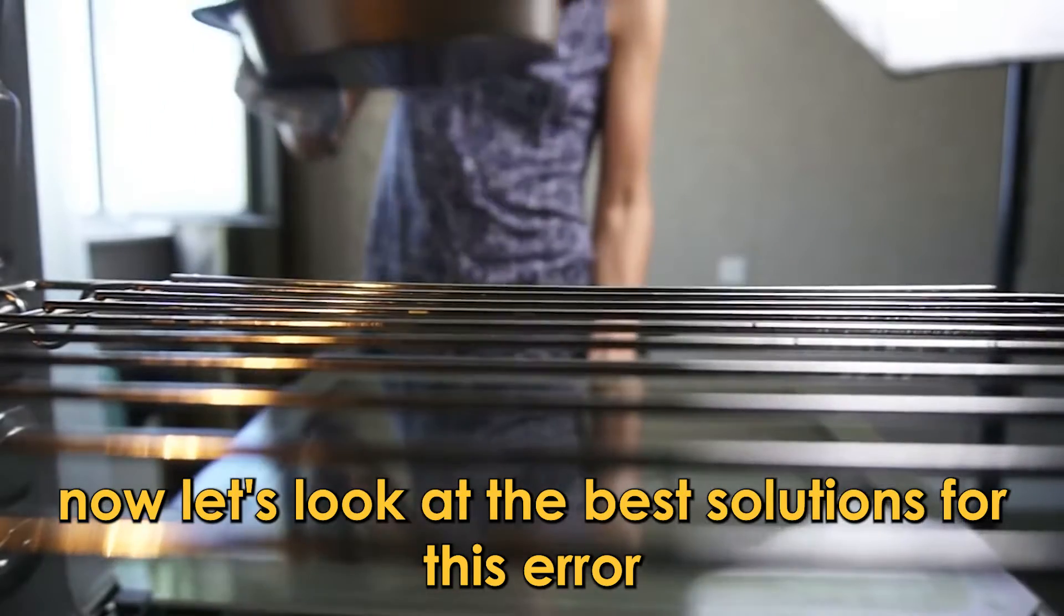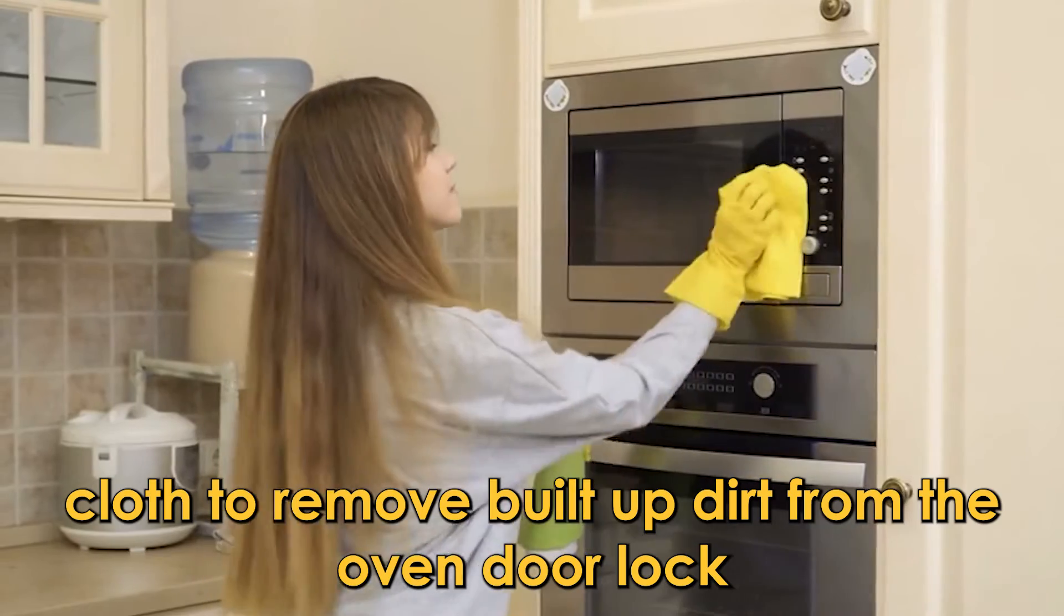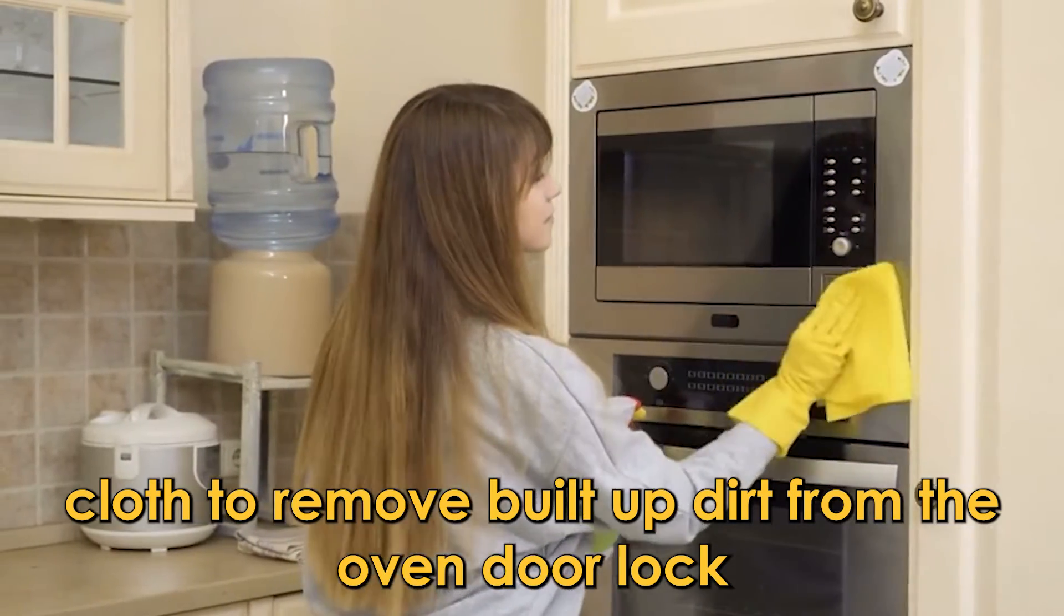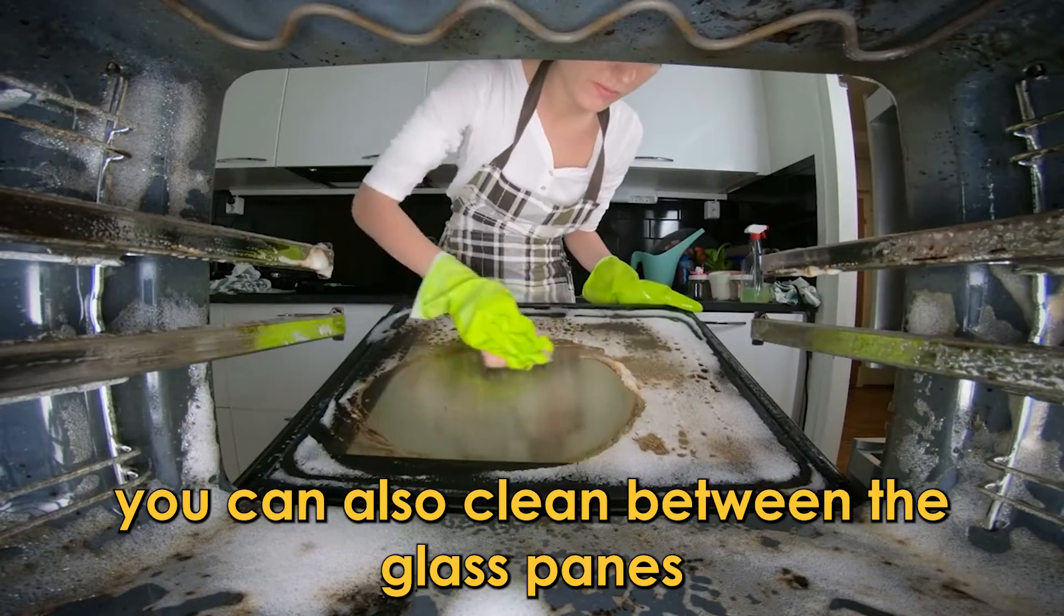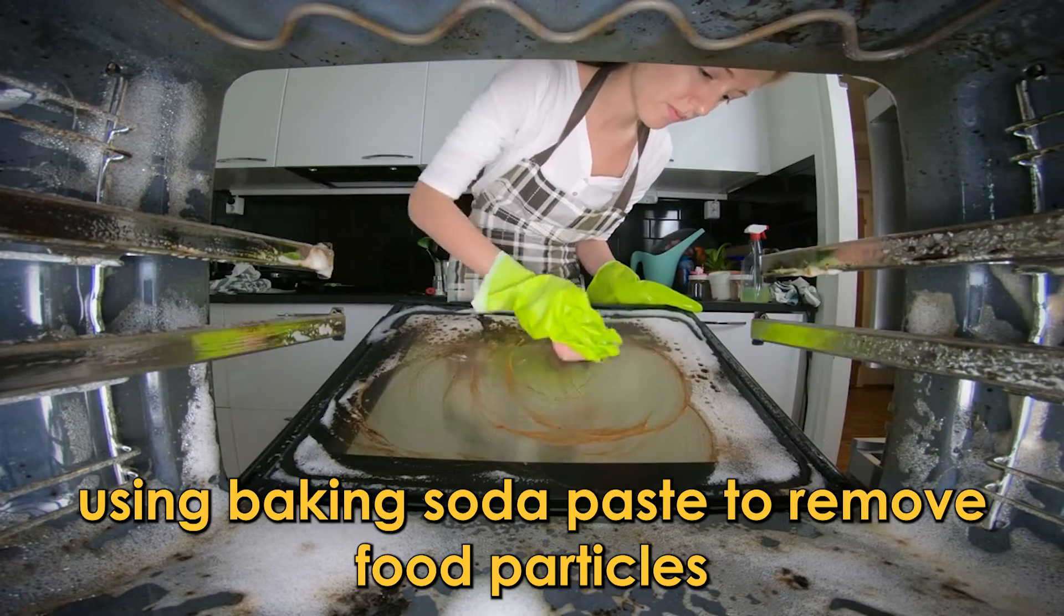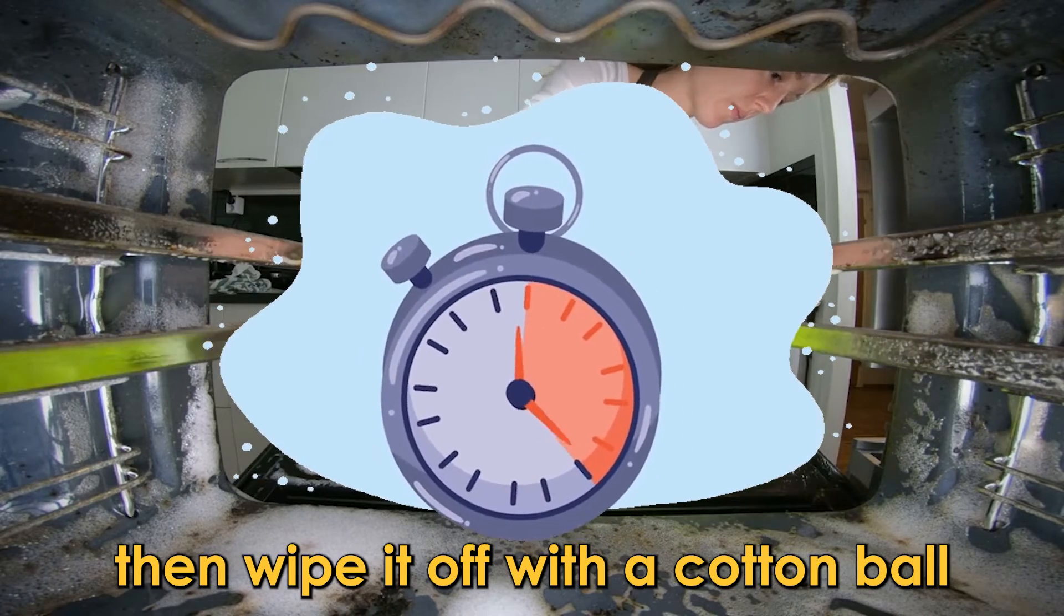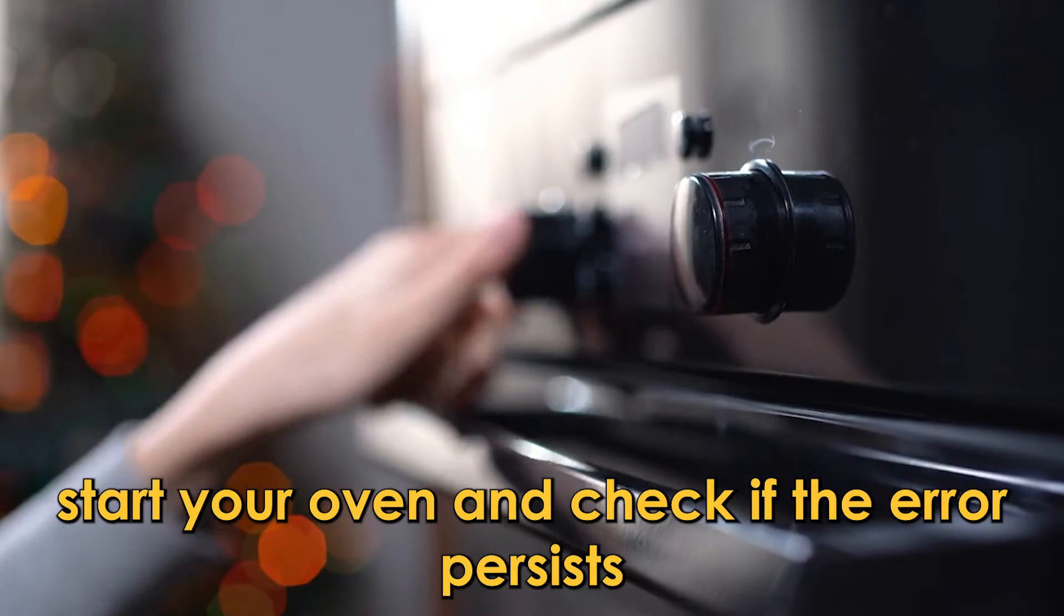Now let's look at the best solutions for this error. Clean the oven door lock. Use a microfiber cloth to remove built-up dirt from the oven door lock. You can also clean between the glass panes on the oven door using baking soda paste to remove food particles. Leave the paste for 15 minutes, then wipe it off with a cotton ball. Start your oven and check if the error persists.